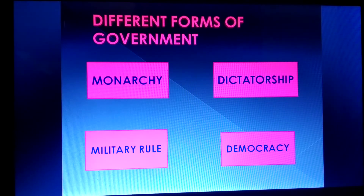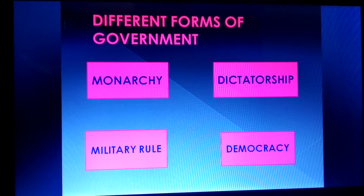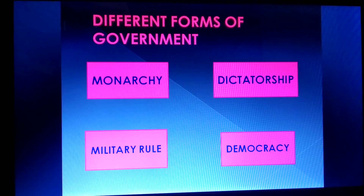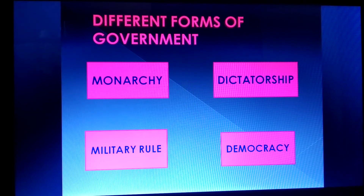First is monarchy, which we have also studied in the French Revolution. Monarchy means when the king is the head of the country and the country has to work according to the rules or laws made by the king. Dictatorship is when one ruler is there, no opposition exists, only the ruler has all the rights, and citizens don't have any role. Military rule — we studied in the French Revolution how Napoleon declared himself as the ruler of France.